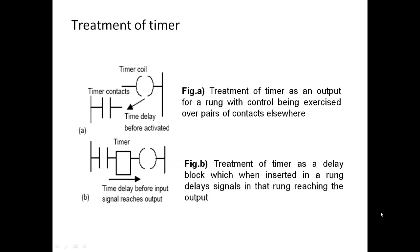Treatment of timer. Figure A shows a timer as an output for a run with control being exercised over pairs of contact elsewhere. Figure 2 shows the treatment of timer as a delay blocker which is inserted in a run to delay signal in the rung which reaches the output.